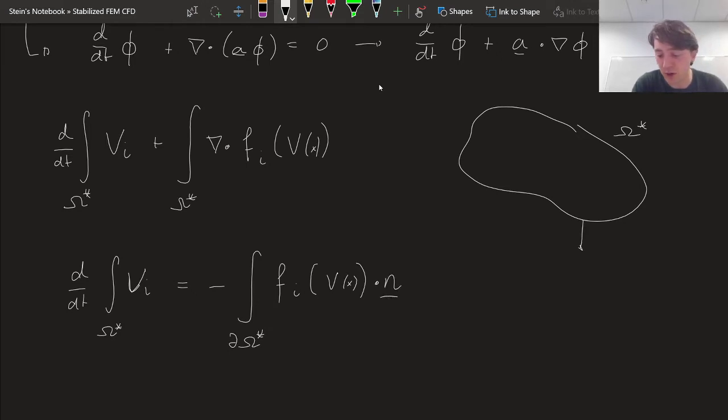The integral over partial omega star of f_i(V, x) dot n, and this is an outward facing normal, which is why we have a negative sign. This is showing what these flux functions are - they tell us how the information propagates, to what extent it flows through any arbitrary surface.